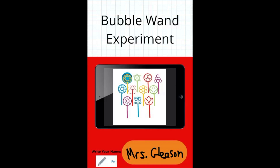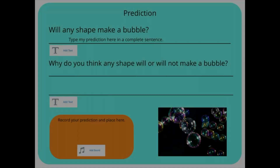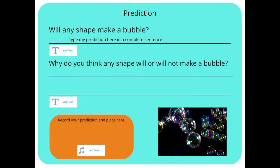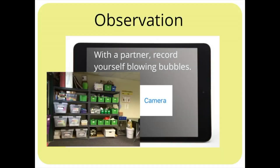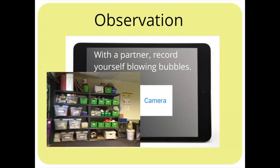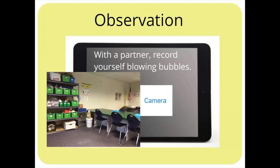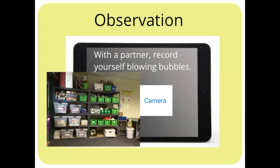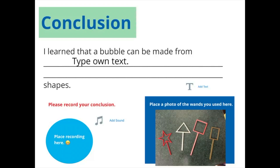I created a bubble wand experiment journal and book creator for all the students to use. All the classroom teacher has to do is AirDrop it to their students. As you can see, on each page it shows you what you need to do, and there's a little symbol for students to know — when they click the plus button in Book Creator, that's what they need to add.